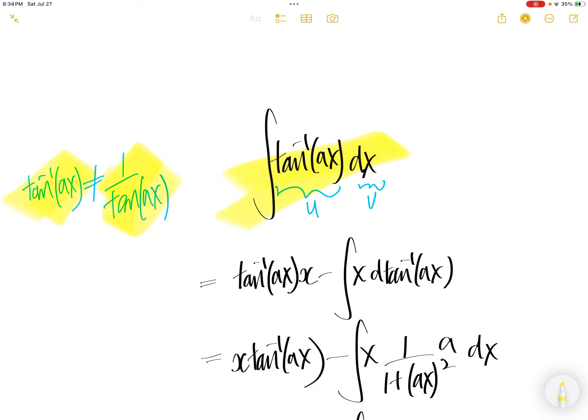So we're gonna let arctan Ax be u and then the x be v. And then when we have integral u dv, you get uv minus integral v du. u and v interchange to get over here. This is IBP, integration by parts. So we have integral u dv. You have uv minus integral v du.